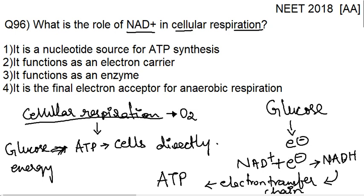Our correct option is option number 2. Now let's discuss the other options as well. Option 1: it is a nucleotide source for ATP synthesis — no, it is not the nucleotide source for ATP synthesis. Option 3: it functions as an enzyme — no, it does not function as an enzyme. An enzyme is something that is required for a chemical reaction to occur; it can enhance or alter the rate of a chemical reaction. NAD plus does not function as an enzyme.